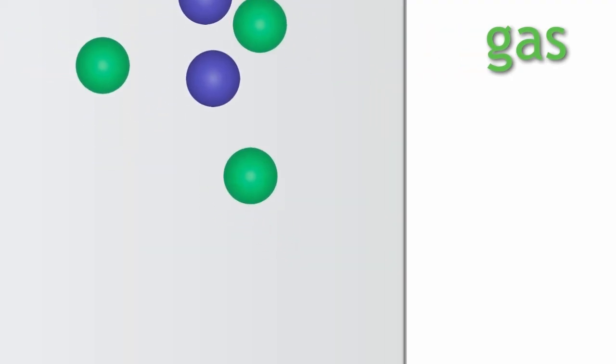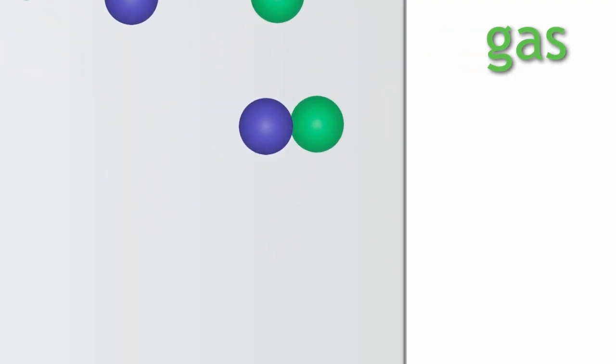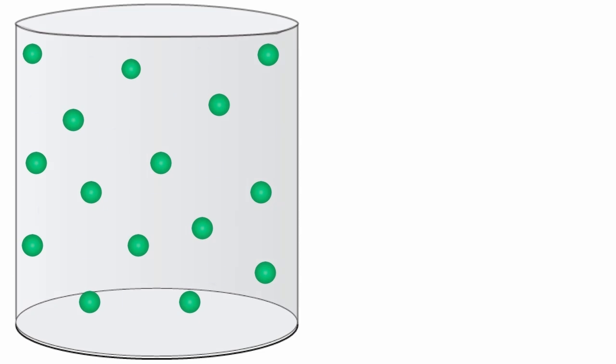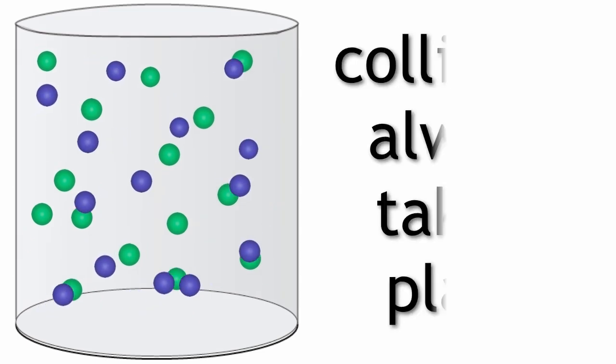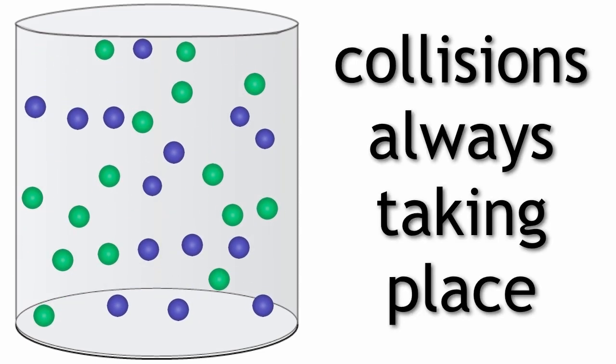Well, just as the gas particles can hit the walls of a container and rebound, the particles can also hit each other. It doesn't matter if there is only a single gas or a mixture of gases. These collisions between particles are always taking place.